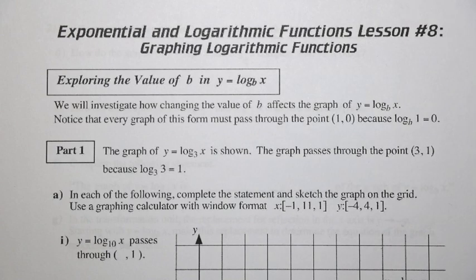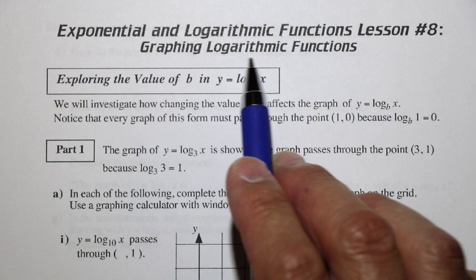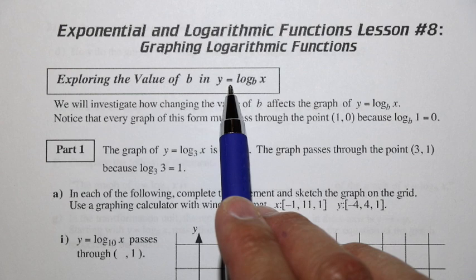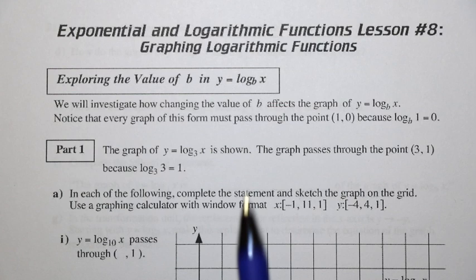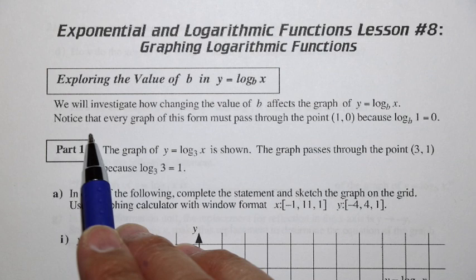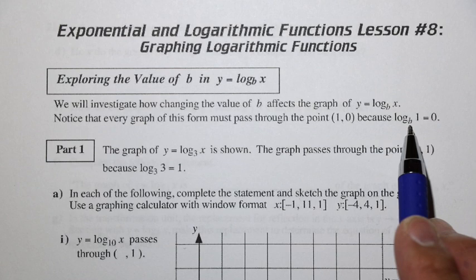Let's talk about exponential and logarithmic functions, lesson number 8, and we're going to graph log functions. We're going to explore the value of b in the function y equals log base b of x — how does the value of the base b change the way the graph looks? We'll investigate how changing that value affects the graph, and notice that every graph of this form must pass through the point (1, 0), because the log of any base b with the argument 1 is equal to 0.